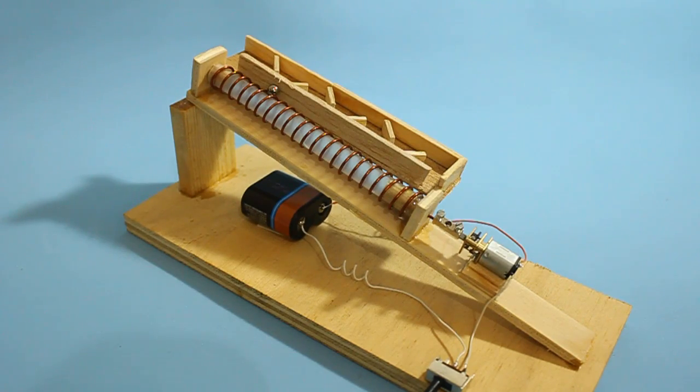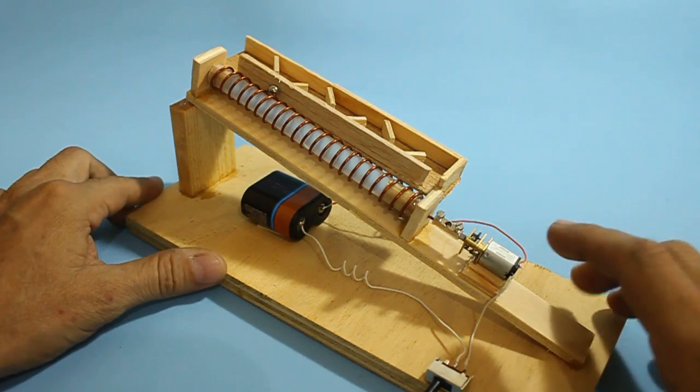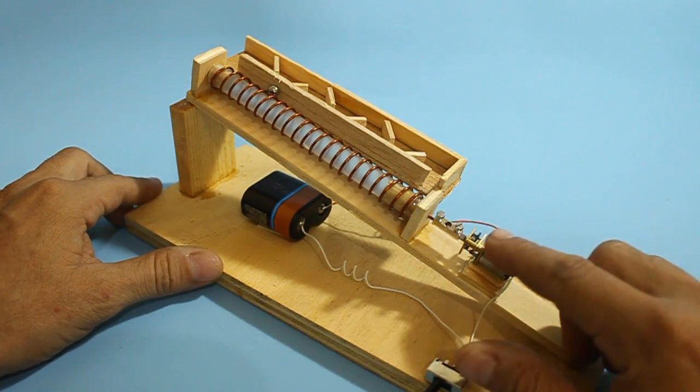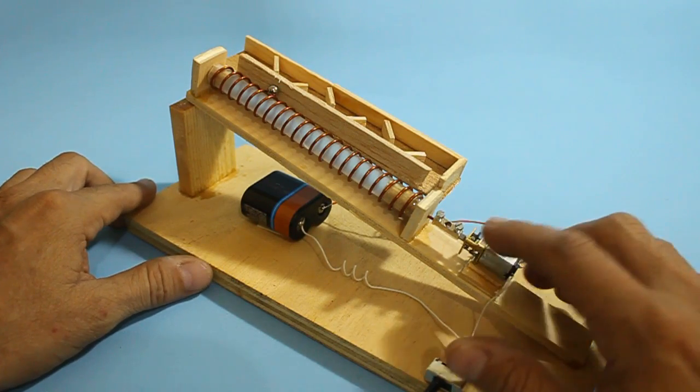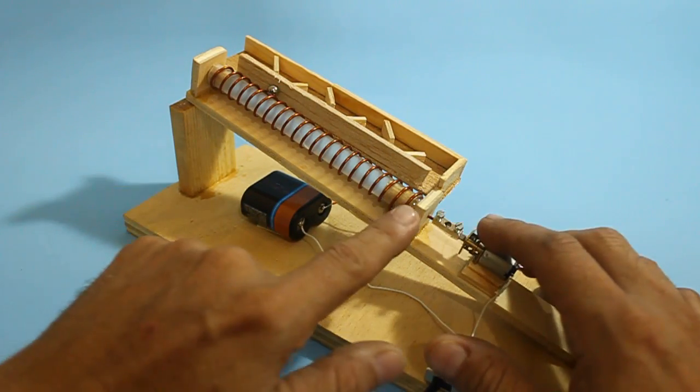The concept is really simple. We have an electric motor with gear reduction. It spins at around 100 revolutions per minute and it makes this spiral spin.